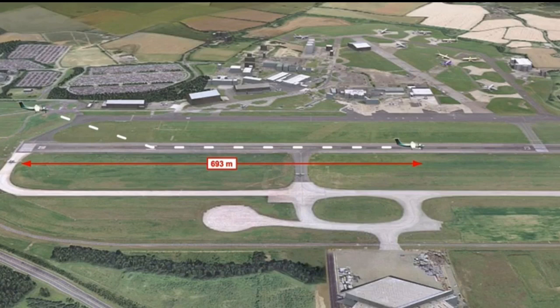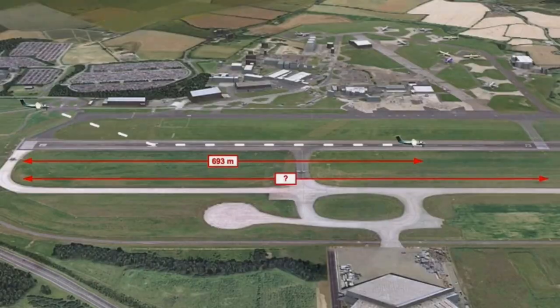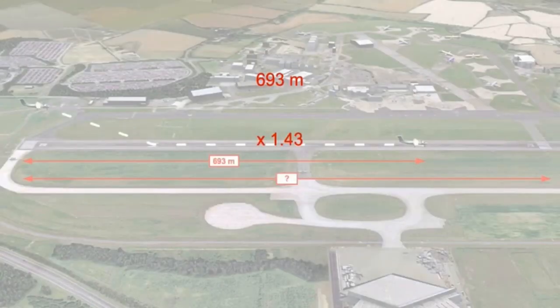For example, a turboprop aeroplane has a calculated landing distance of 693 meters. What is the minimum landing distance available at the airfield to comply with regulations? Since 693 meters must be 70% of the required runway length, we multiply 693 by 1.43.